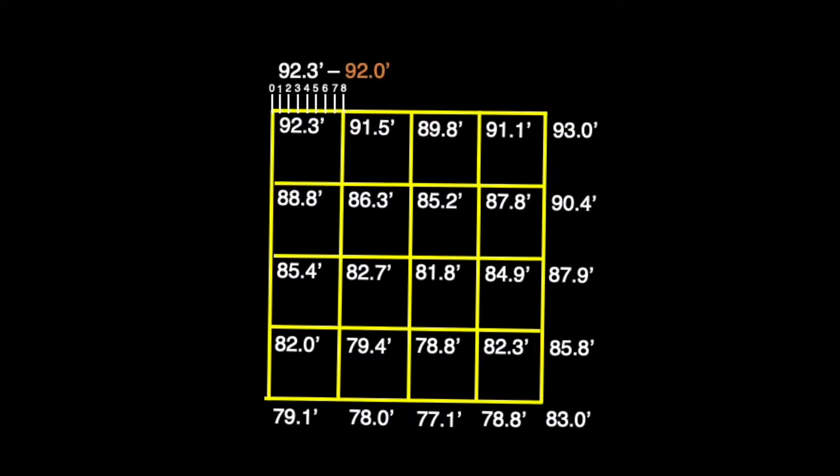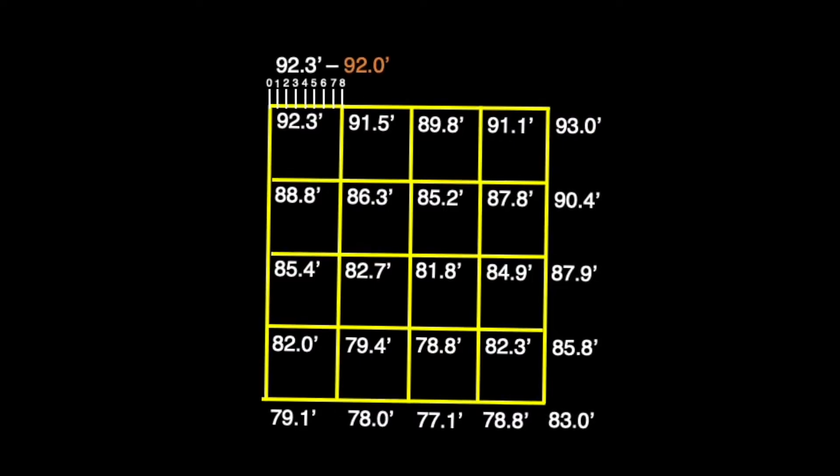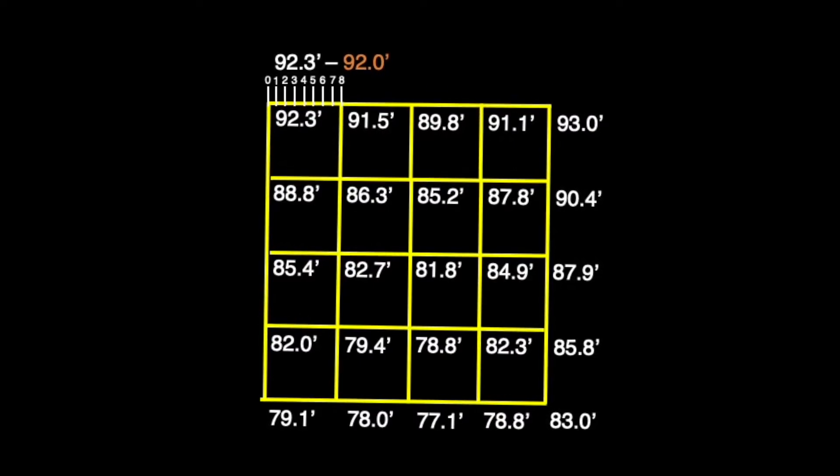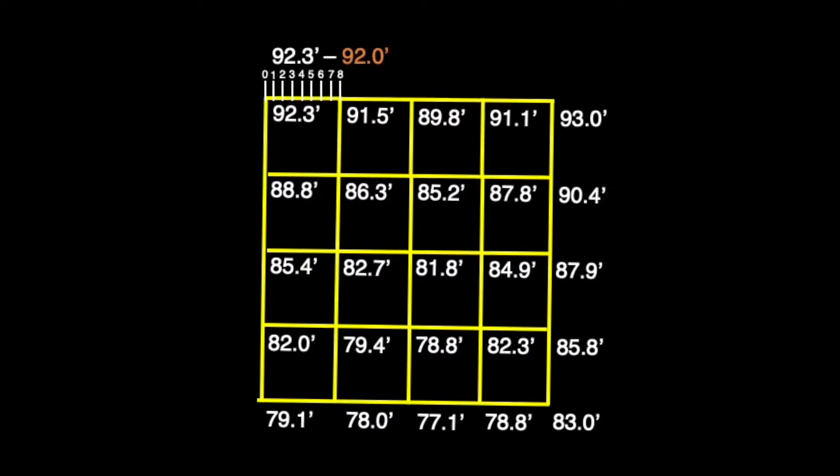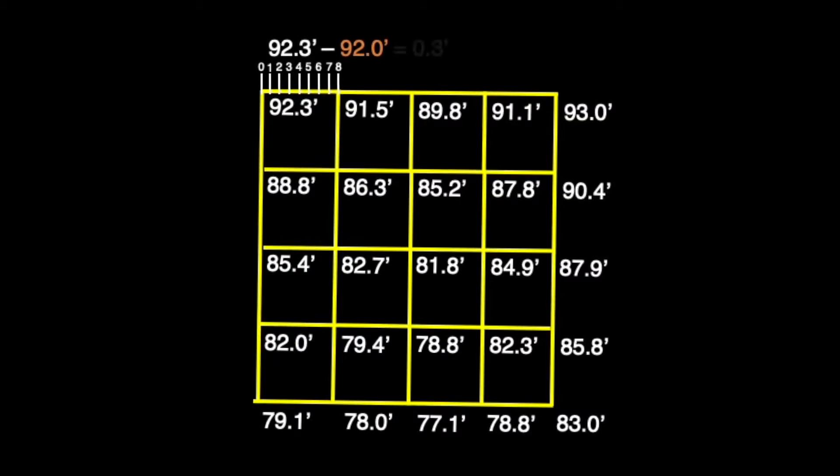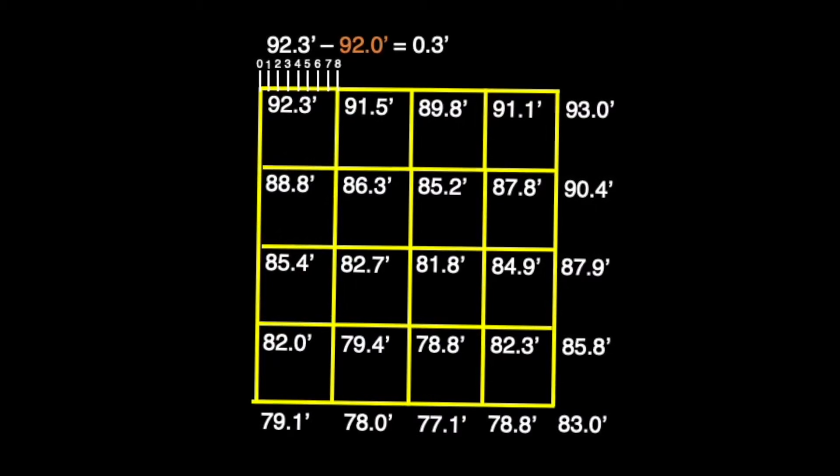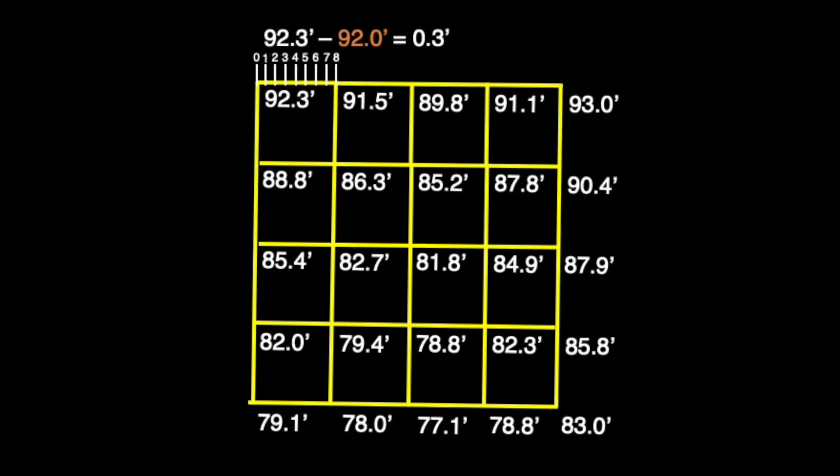To do this, we'll once again take our elevation measurement of 92.3 feet and subtract the desired contour point we wish to reach. Having subtracted 92.0 feet from 92.3 feet, we see the difference of 0.3 feet remaining.